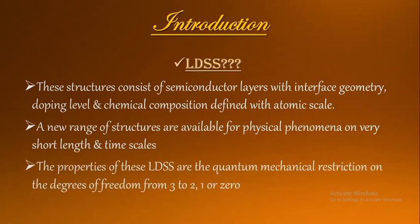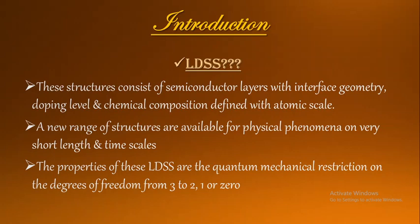The properties of these structures involve quantum mechanical restriction on the degrees of freedom from 3 to 2, 2 to 1, or even to 0. If you consider a three-dimensional semiconductor, it is nothing but the bulk structure. Degrees of freedom is nothing but the freedom for the motion or movement of the carrier. In a semiconductor, the electron is free to move in all directions - mainly along three directions - that's why we say three-dimensional semiconductor.